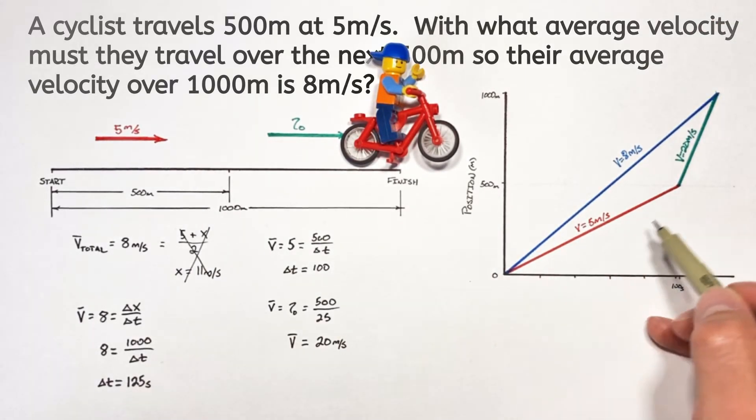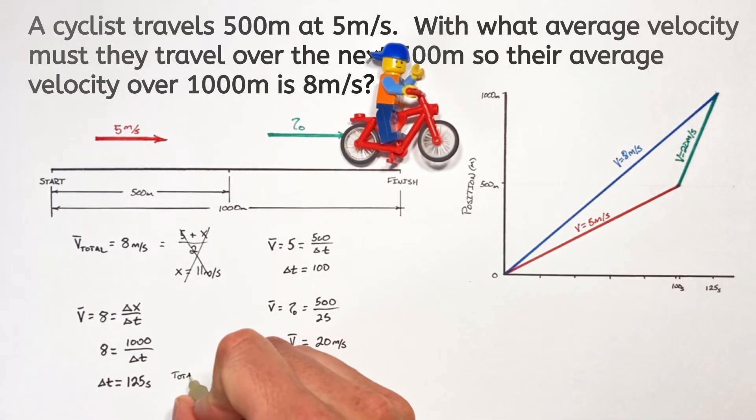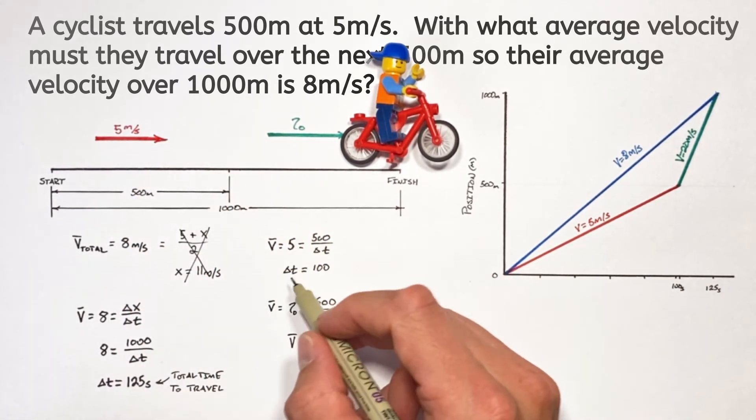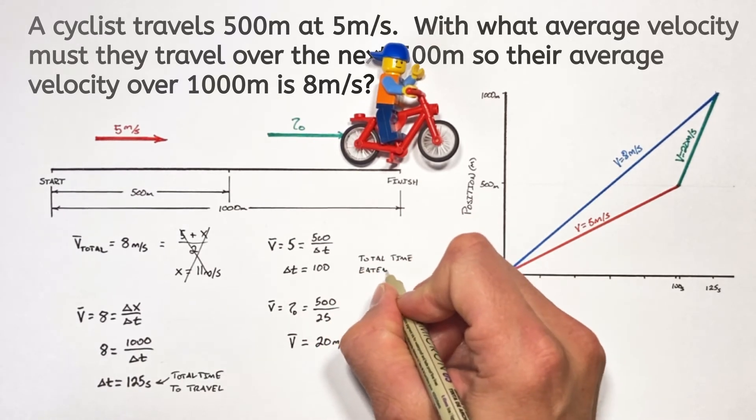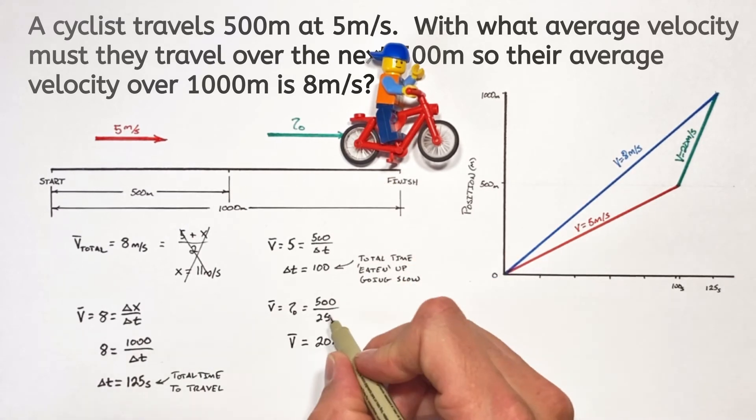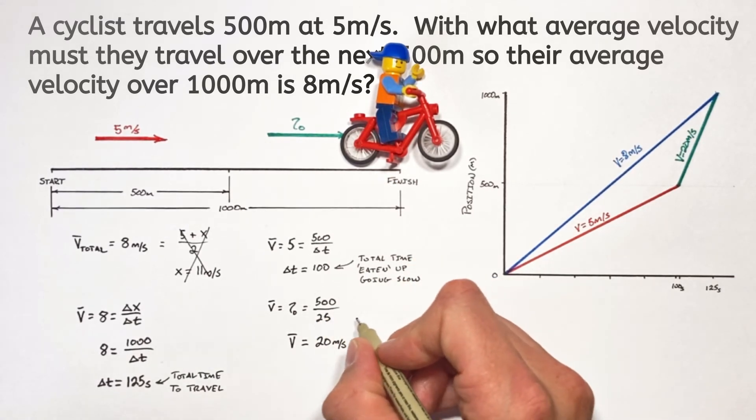You see, the issue here is that these 125 seconds were the total time the little guy had to travel the full distance. But by going slow for the first half of the motion, it effectively ate up 100 seconds, which left our little guy with only 25 seconds to get to the finish line.